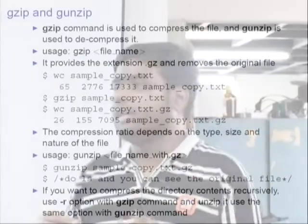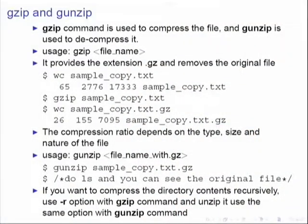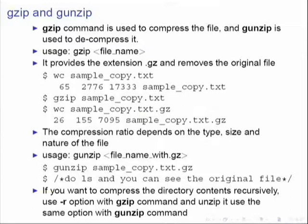You can use these utilities mainly for sending large files — for example, if there is a huge file you want to send as an email attachment. If you want to compress a whole directory, you can use the -r option with gzip. For example: gzip -r compression, where compression is the directory name. Then cd into the compression directory and you will see that all the files inside have been zipped.